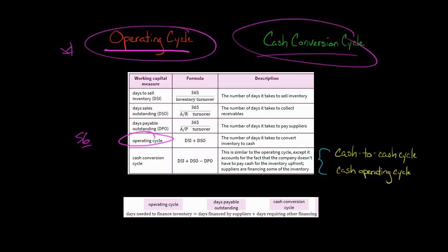Here's where days payable outstanding comes into the picture, and this gets into the cash conversion cycle. Days payable outstanding is the number of days it takes this company to pay its suppliers. If we take that and subtract it from the operating cycle — which is the sum of days to sell inventory and days sales outstanding — that gives us the cash conversion cycle, sometimes called the cash-to-cash cycle or cash operating cycle. They're all referring to the same thing.